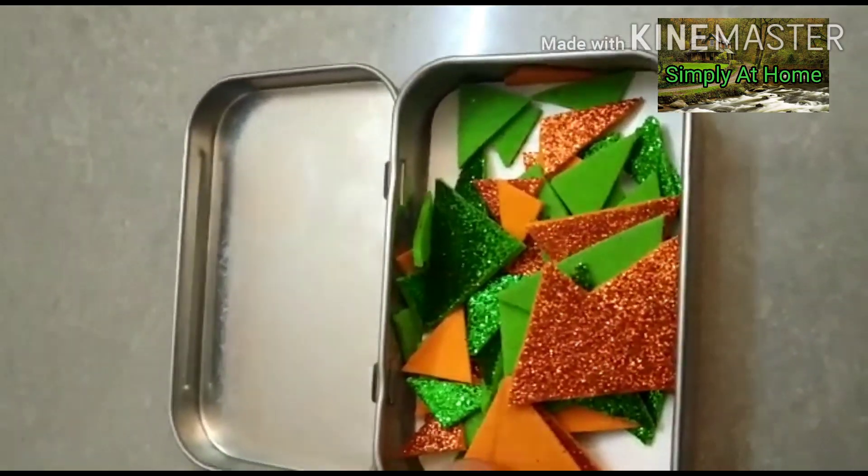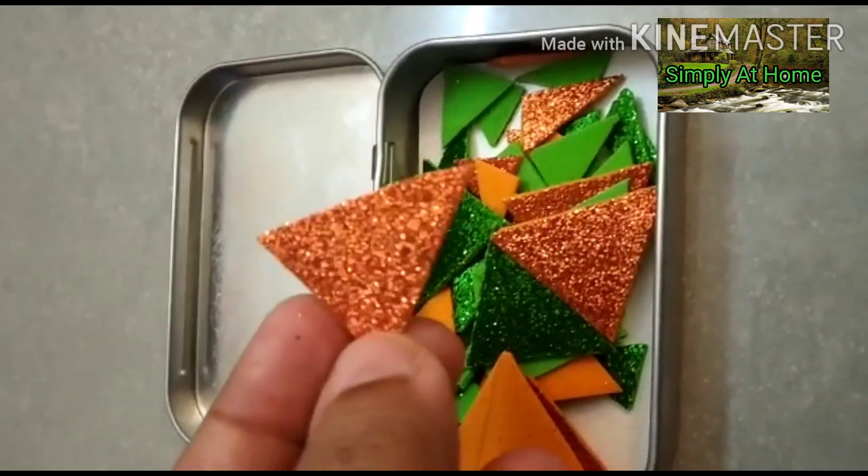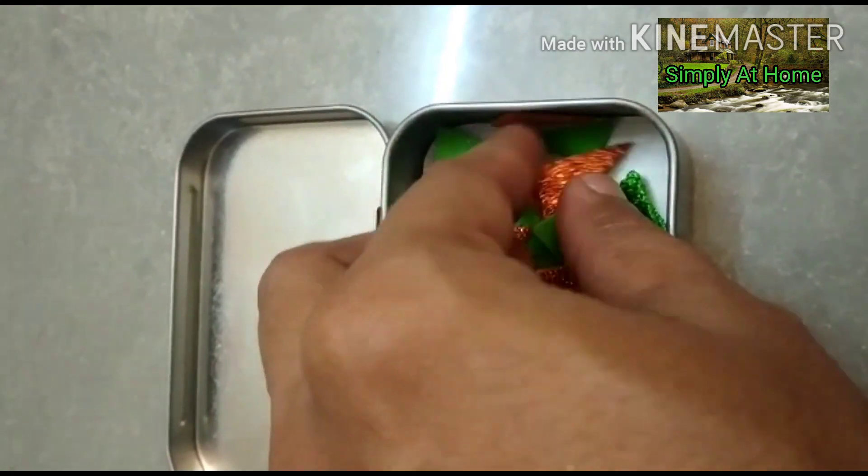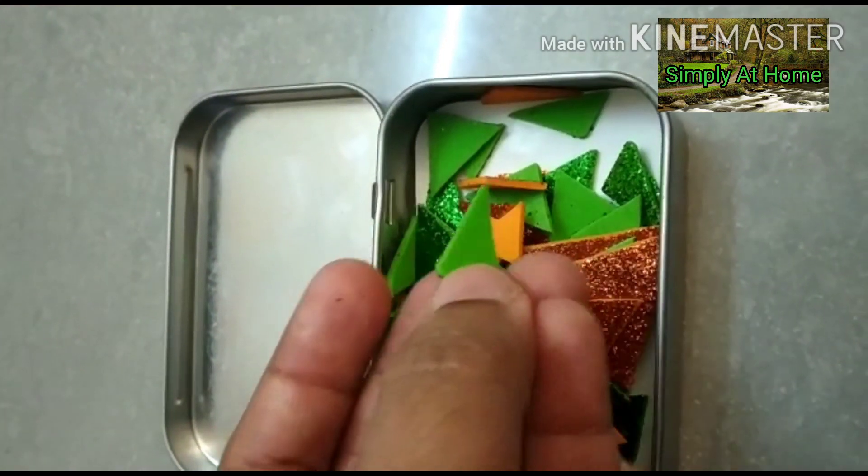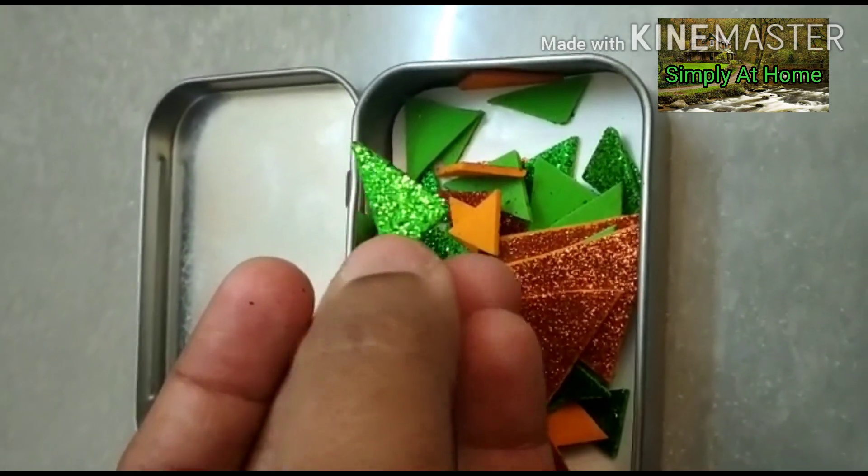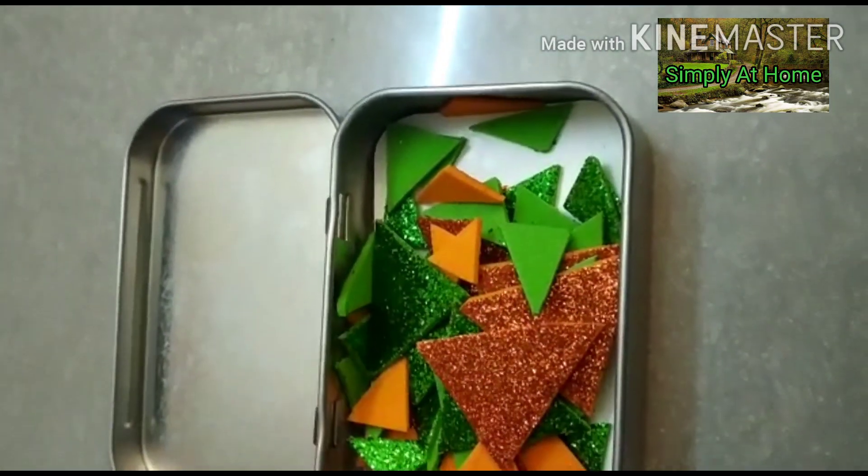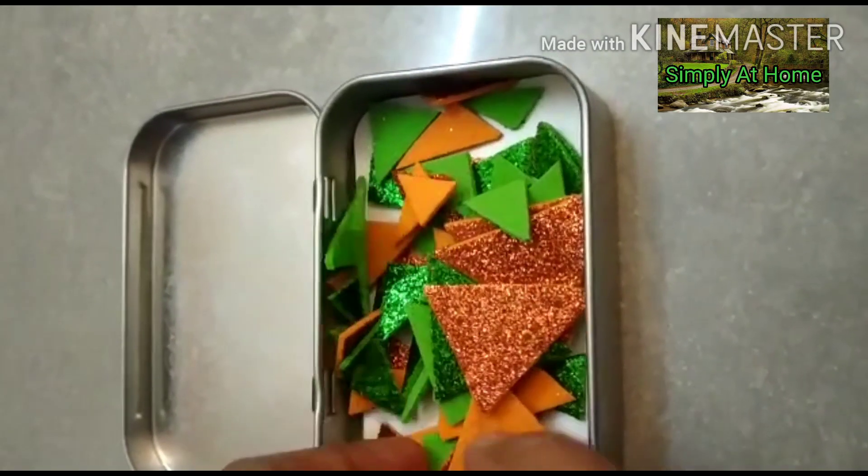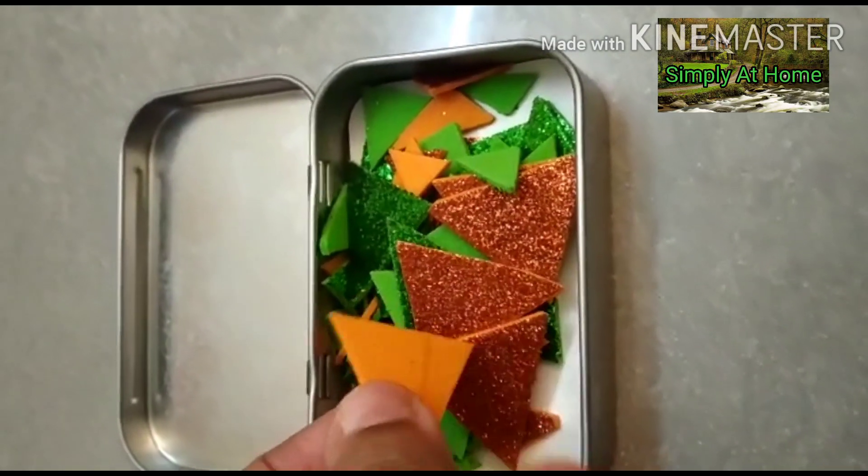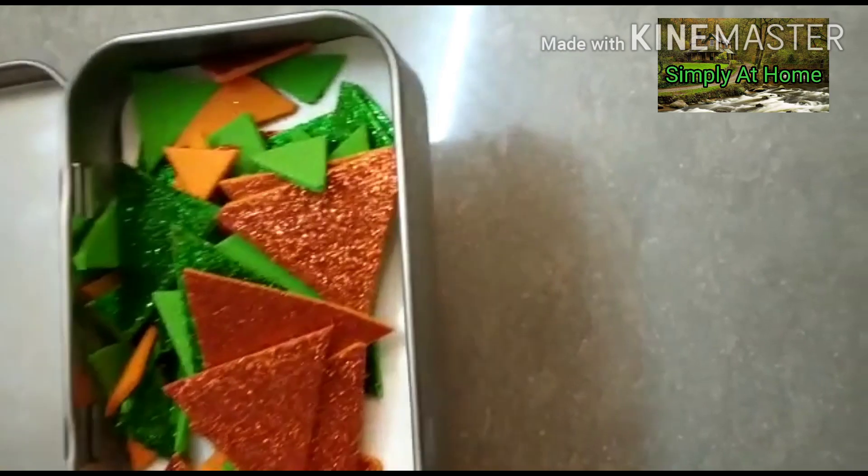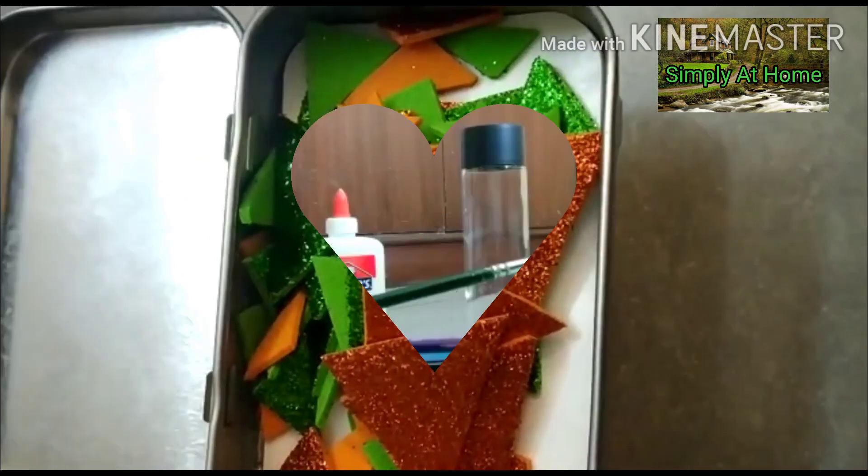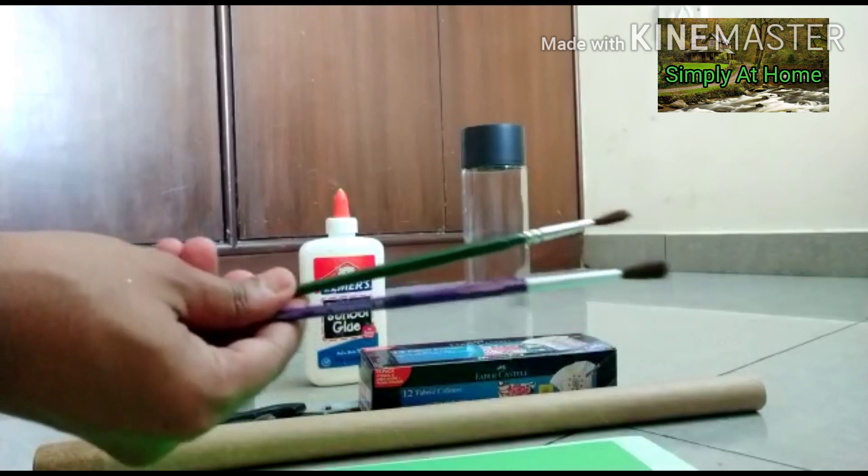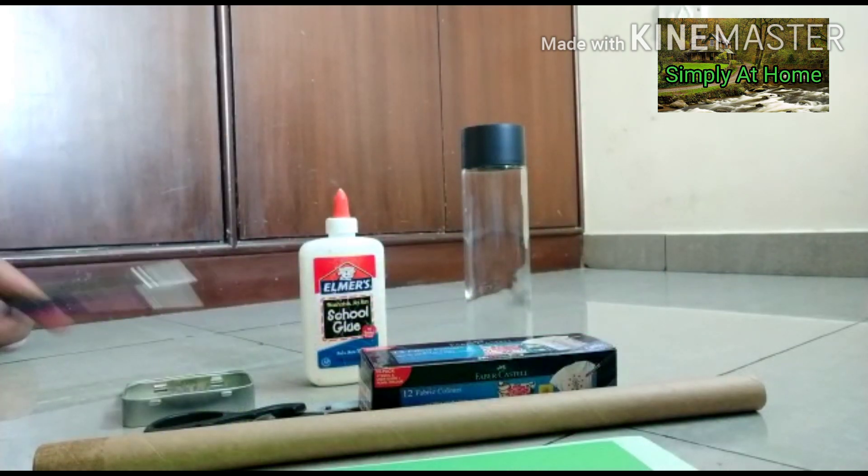Here I'm using glitter foam from a previous project where I cut them into triangle pieces. But you can cut stars, circles, miniature Christmas trees - your creativity can be whatever you want it to be. You can use regular foam as well, not just glitter foam. And if you have two brushes here, you can give it two different colors. So let's get started.